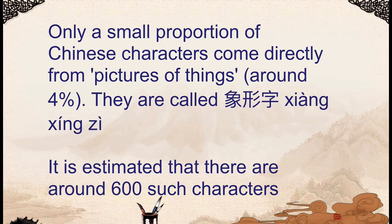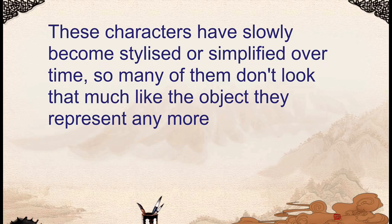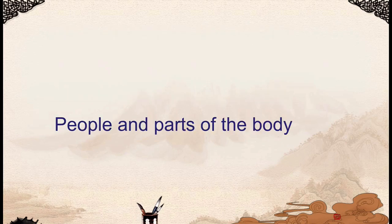Let's have a look at a few examples of these characters which look like things or are pictures of things. Some of them have become stylized or simplified over time, so they don't actually look that much like the picture they used to represent — that's something you've got to bear in mind. There are some major categories of these kinds of characters, and the first one is people and parts of the body.